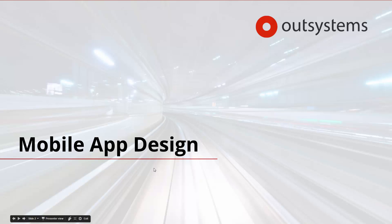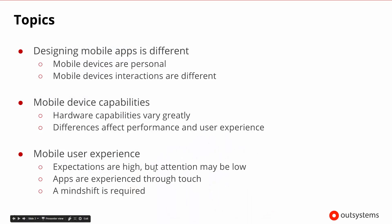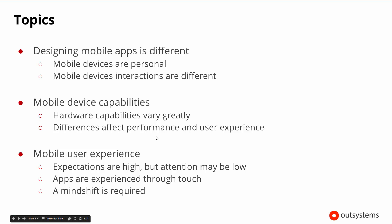Welcome to the mobile app design session. In this session, we'd like to talk about how designing for mobile apps is different, and understanding that it is different — why is it different? Because mobile devices have different types of capabilities. We'll discuss some of the details of how they have different capabilities and what those differences are, and then finish up by talking about mobile user experience.